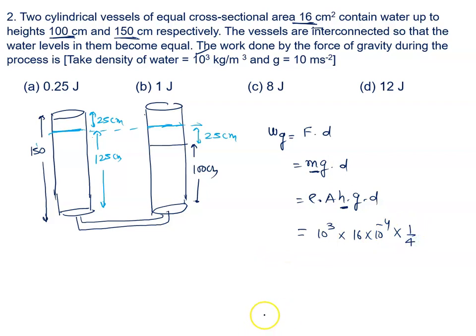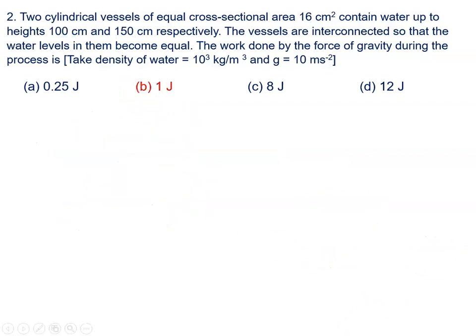That is 25 cm, that is 1 by 100, 25 by 100, 1 by 4. Gravity is 10, and displacement is also 1 by 4 because 25 cm. Now we will solve it and we will see the answer is 1 J. So the right answer to this problem is option B, that is 1 J.